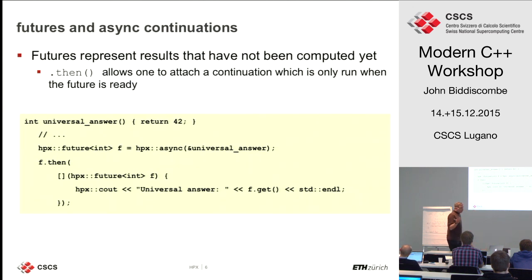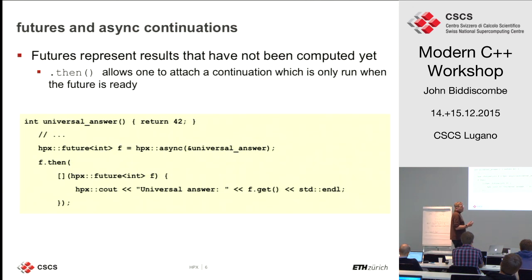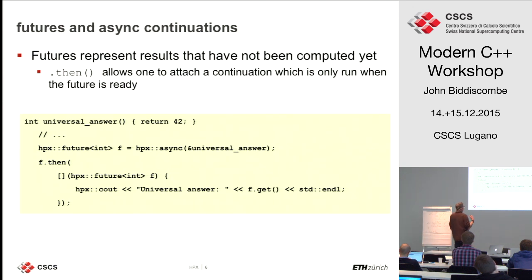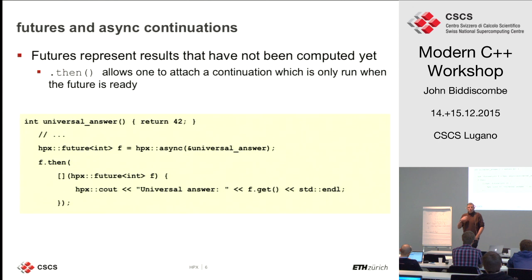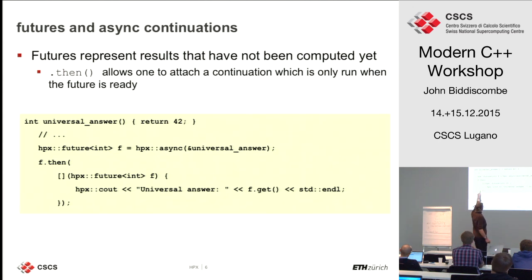Futures in HPX are extended with the `.then()` keyword, so you can say: here's a task, run it, give me a future to it, and when that future is ready — when that task is finished — then do this. The nice thing is that when you call `.get()` on your future here, you're not waiting for it, because `.then()` only gets scheduled to run when the future is already ready, so there's no wait applied and you're not putting your task into a suspended state.